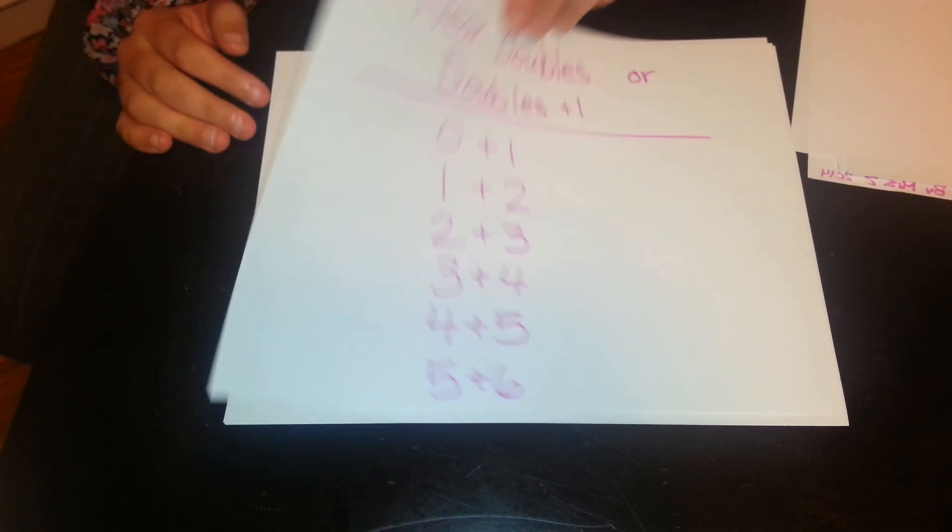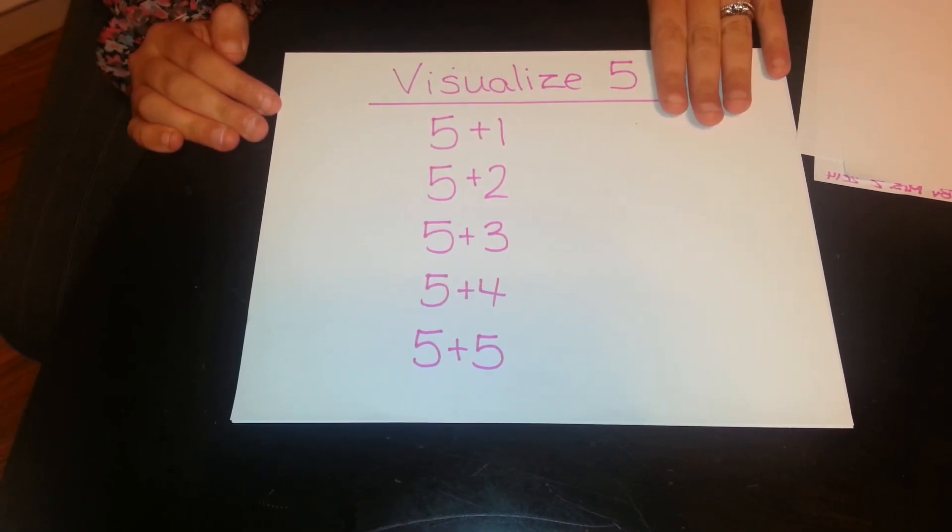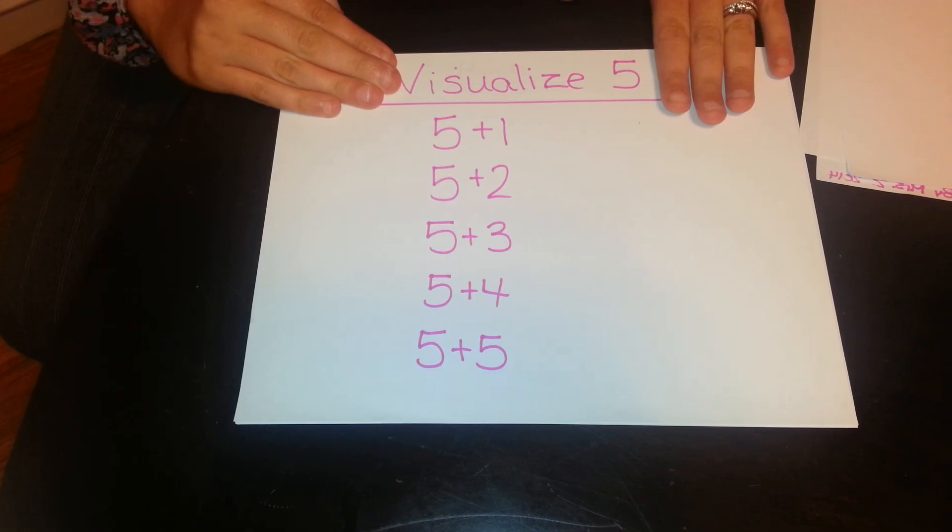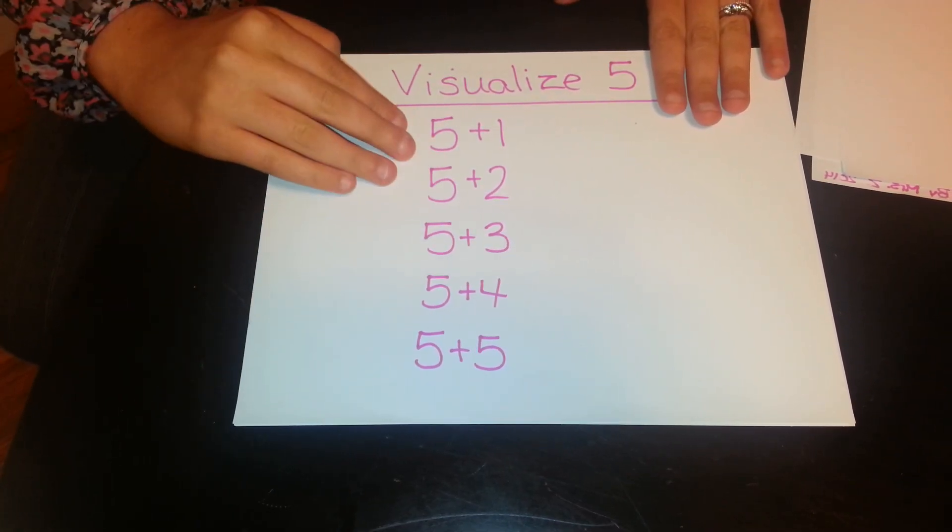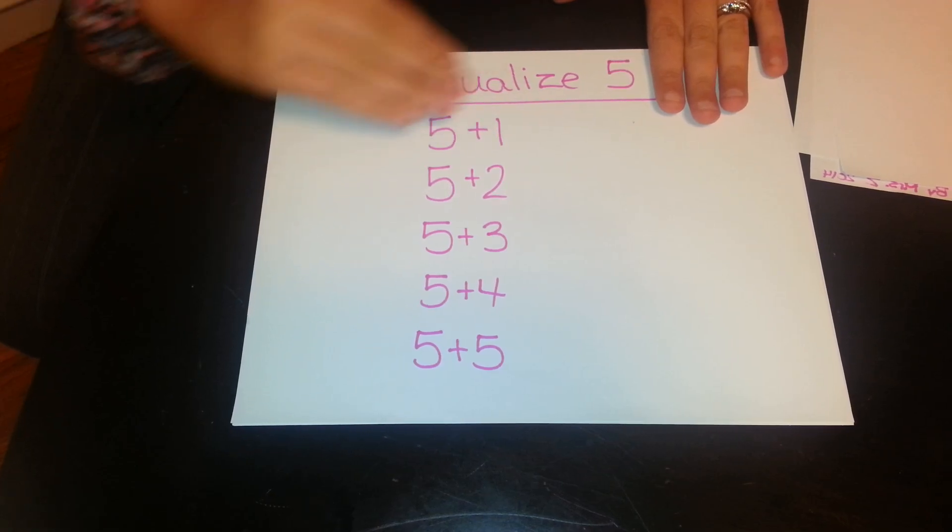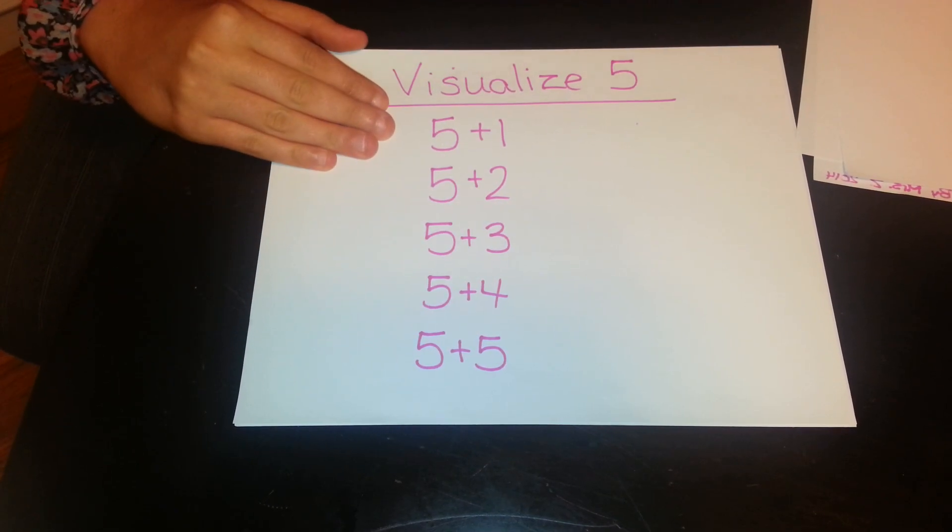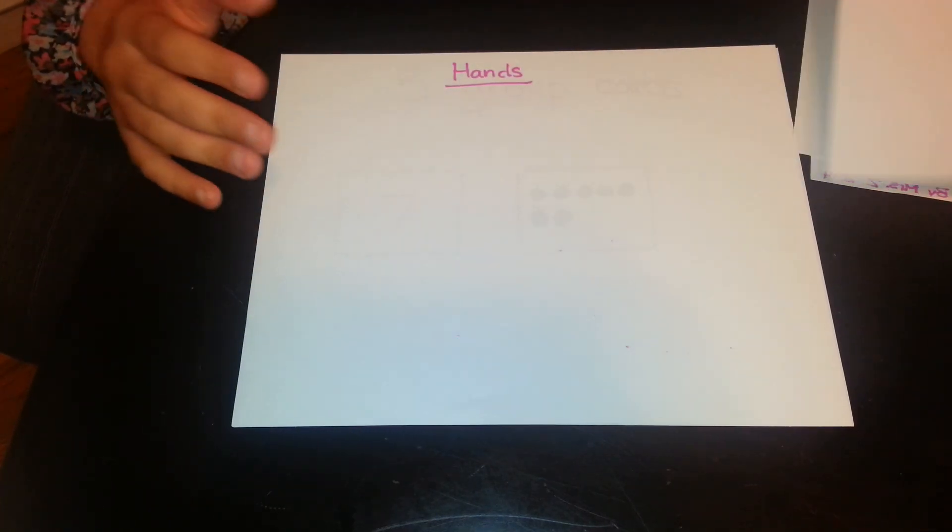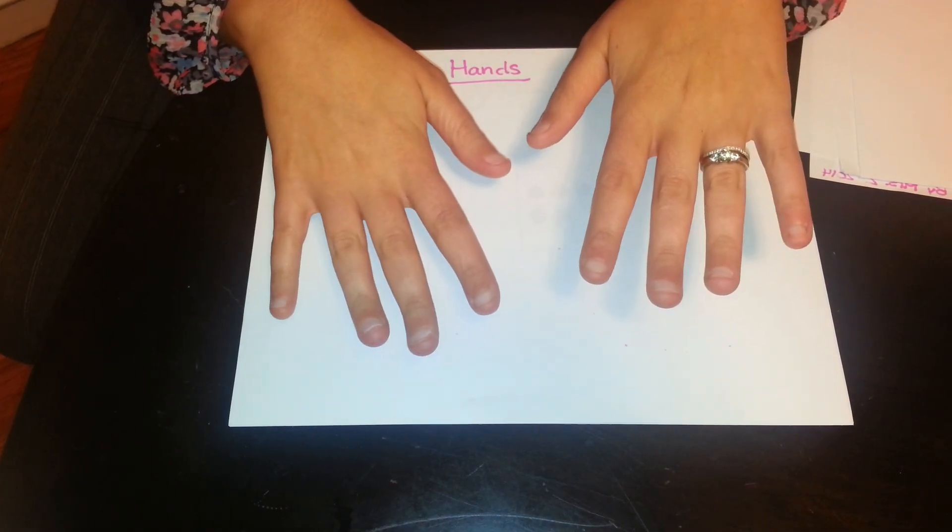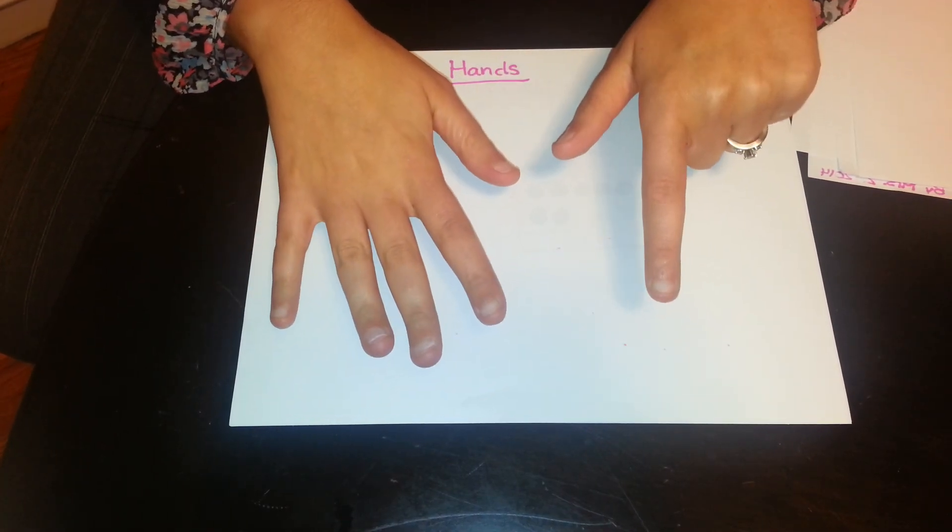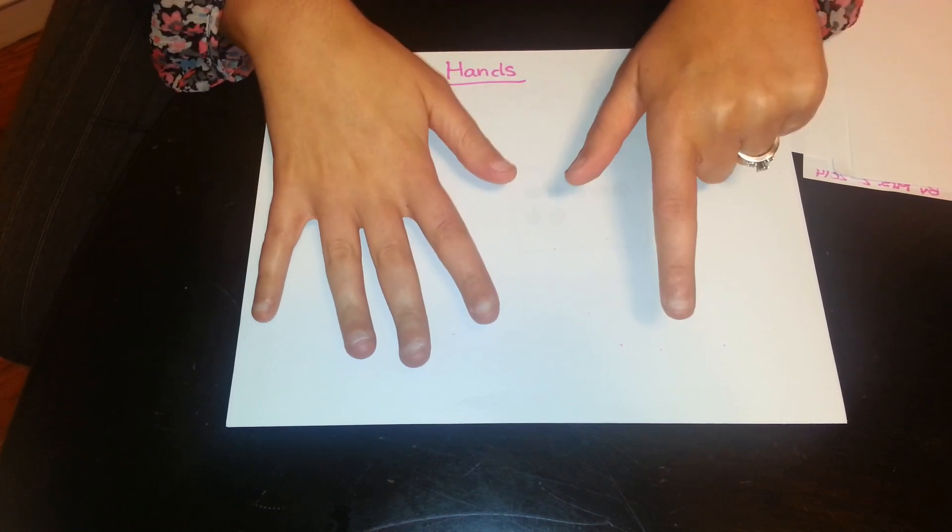Our last technique is visualize 5. Most of the questions I had was about this. Visualize 5 is for facts where 5 is one of the addends. So either 5 plus 1 or the opposite 1 plus 5. If you have the 5 in there, it can help you visualize it. Just like with your hands, you have 5 on each hand. So for a fact like 5 plus 2, you can visualize thinking 5 in one hand, 2 more.